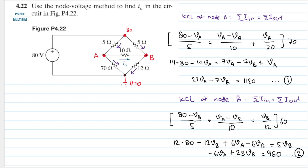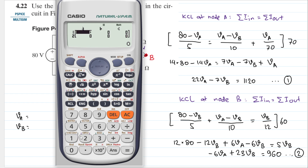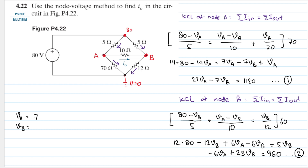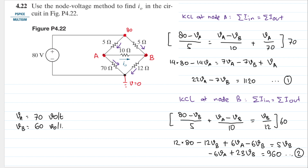We have two equations with two unknowns. Using the calculator's equation solver with two variables: equation one has coefficients 22, minus 7, and 1120; equation two has minus 6, 23, and 960. The solution gives Va equals 74 volts and Vb equals 64 volts.